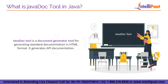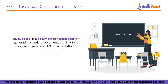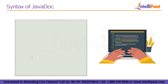Javadoc is basically a documentation generator tool used for generating API documentation in HTML format for Java code. It is included with the Java Development Kit, that is JDK, and is commonly used by Java developers to document their code and provide information about classes, methods, fields, and other elements of their Java code.